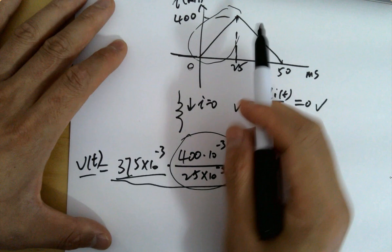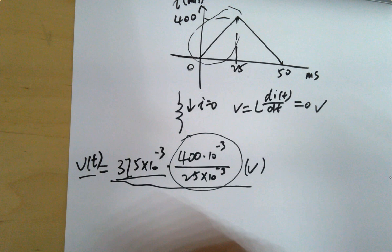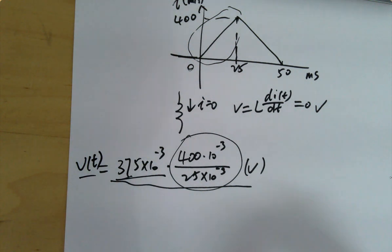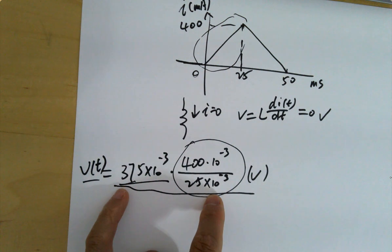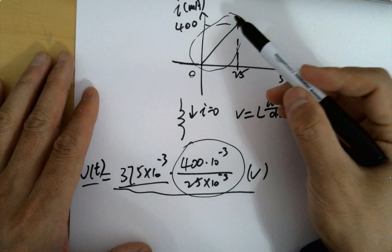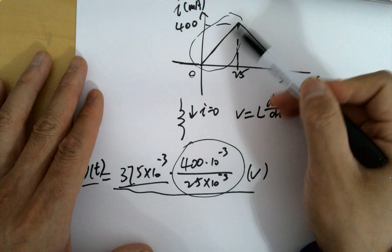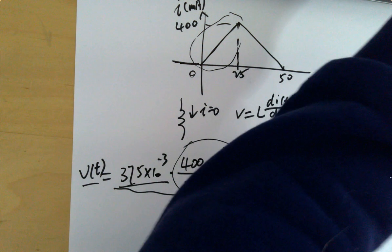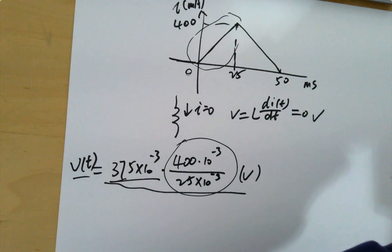For questions about voltage during this linear period, you use the same method. These are constants — not functions of t. However, the current i(t) during this period is a linear equation and is a function of t. Keep that distinction in mind.